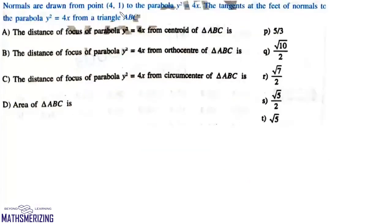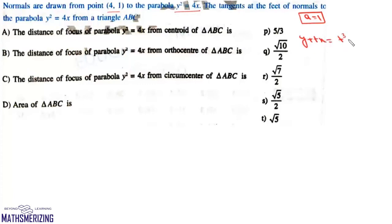Now here the question is: normals are drawn from point (4, 1) to the parabola y² = 4x. The tangents at the feet of the normals form a triangle ABC. For this parabola a = 1, so we write the equation of normal in parametric form: y + tx = t³ + 2t. We need normals passing through (4, 1), so putting x = 4, y = 1: 1 + 4t = t³ + 2t, giving t³ - 2t - 1 = 0.